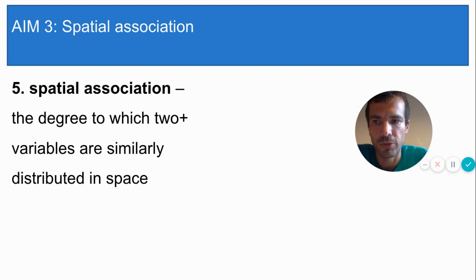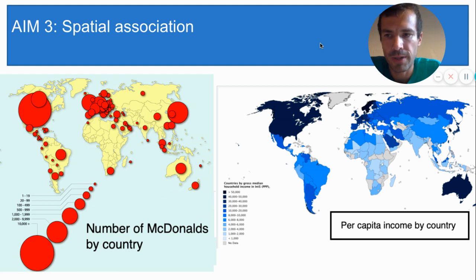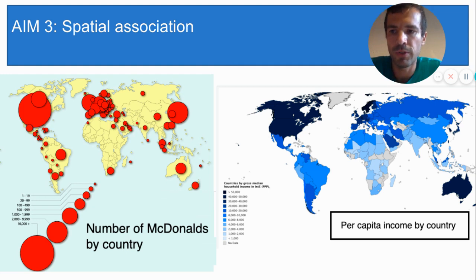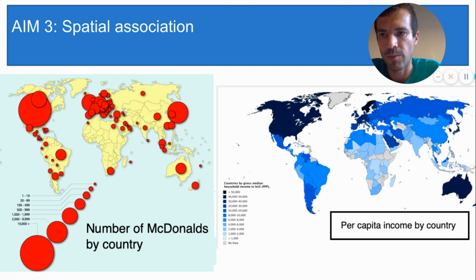Let's look at some examples. Here is our map of McDonald's again, and I want to compare it to another map — per capita income by country. What I'm asking is: is it possible that the number of McDonald's locations in a country is somehow related to the country's wealth? Perhaps wealthier countries have more McDonald's because the population can afford to buy food instead of cooking their own. So that's my hypothesis — that wealthy countries have more McDonald's. Let's test it out by comparing these maps.